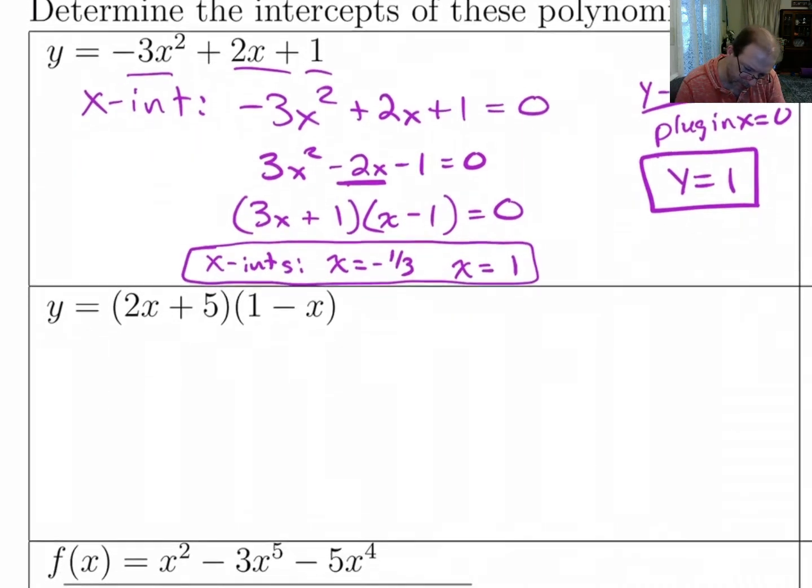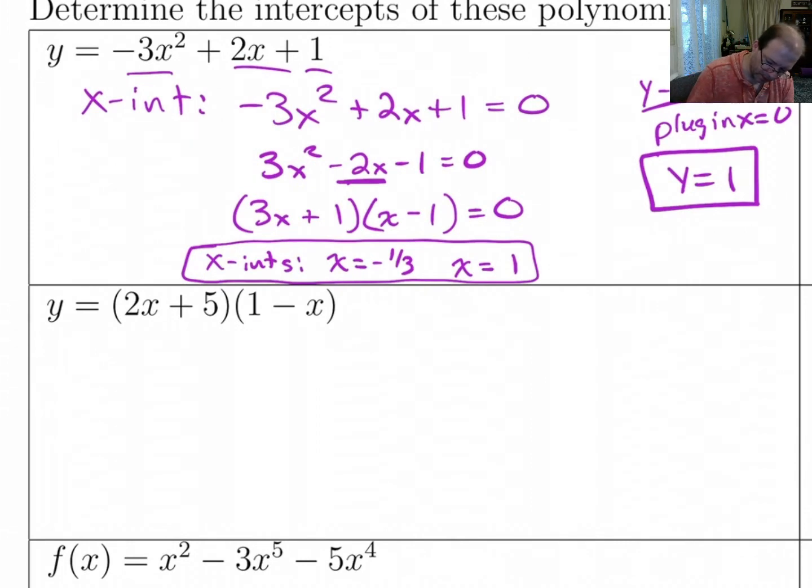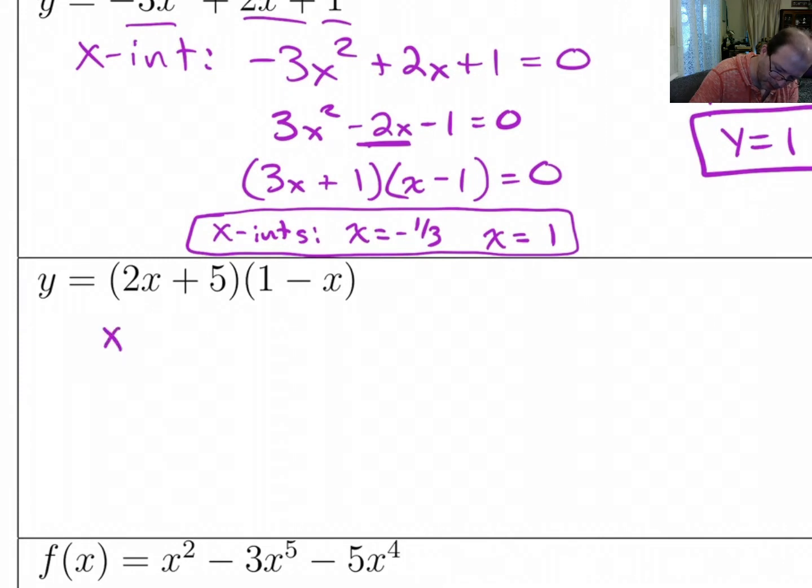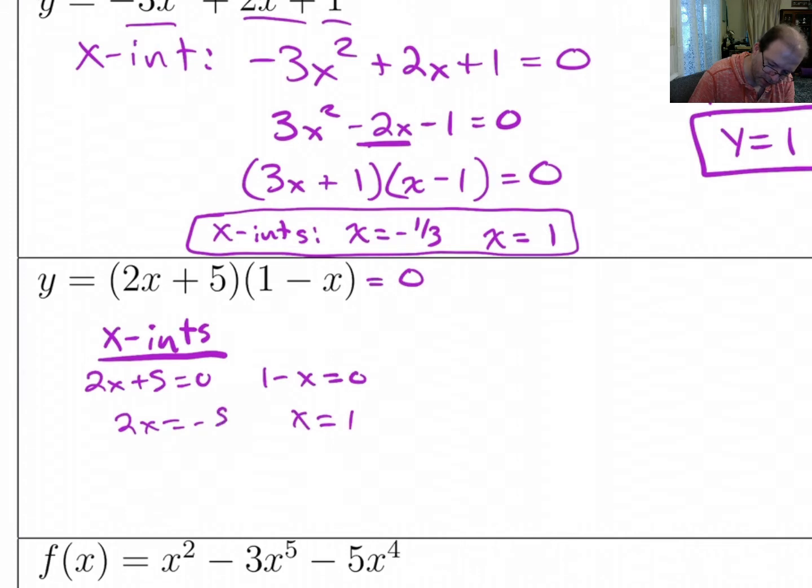Alright, now, this next one, to do its x-intercepts, we set it equal to 0. Now, its x-intercepts are easy to find because if I set this equal to 0, I get 2x + 5 = 0, 1 - x = 0, so this gives me x = 1, and this gives me 2x = -5, so x = -5/2.